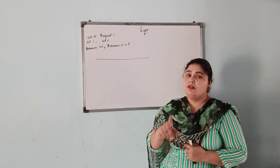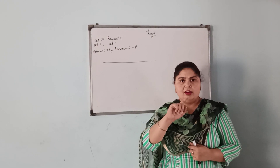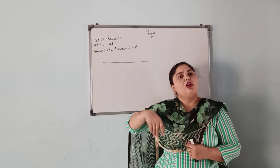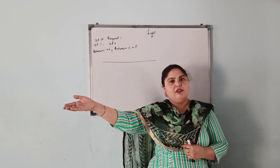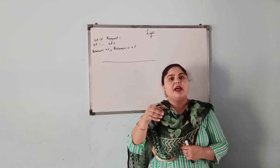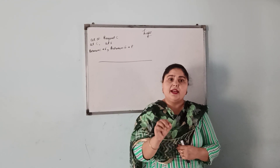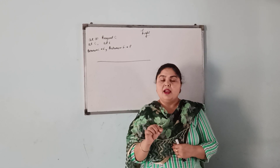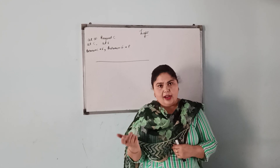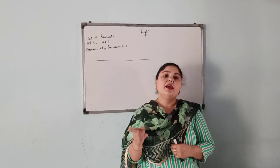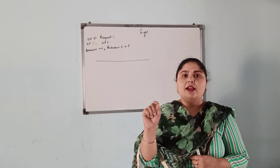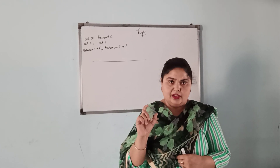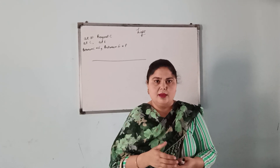We discussed one case where the image was not inverted — that was when the object is at infinity. When the object is at infinity, the image will be formed at F. When it is formed at F, it is a point size image, and a point can never be inverted. That is why in that one case only, the real image is not inverted — it is a point size image.